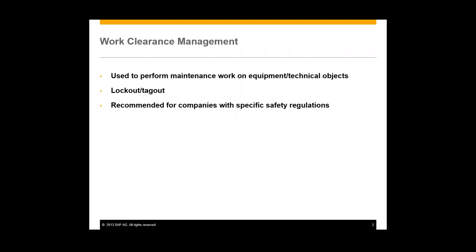Lockout tagout is a major part of work clearance management. In lockout tagout, technical objects are isolated electrically or separated mechanically from other parts of the technical system while the work is carried out. In general, work clearance management is typically used in the chemical, oil, gas, and supply industries.